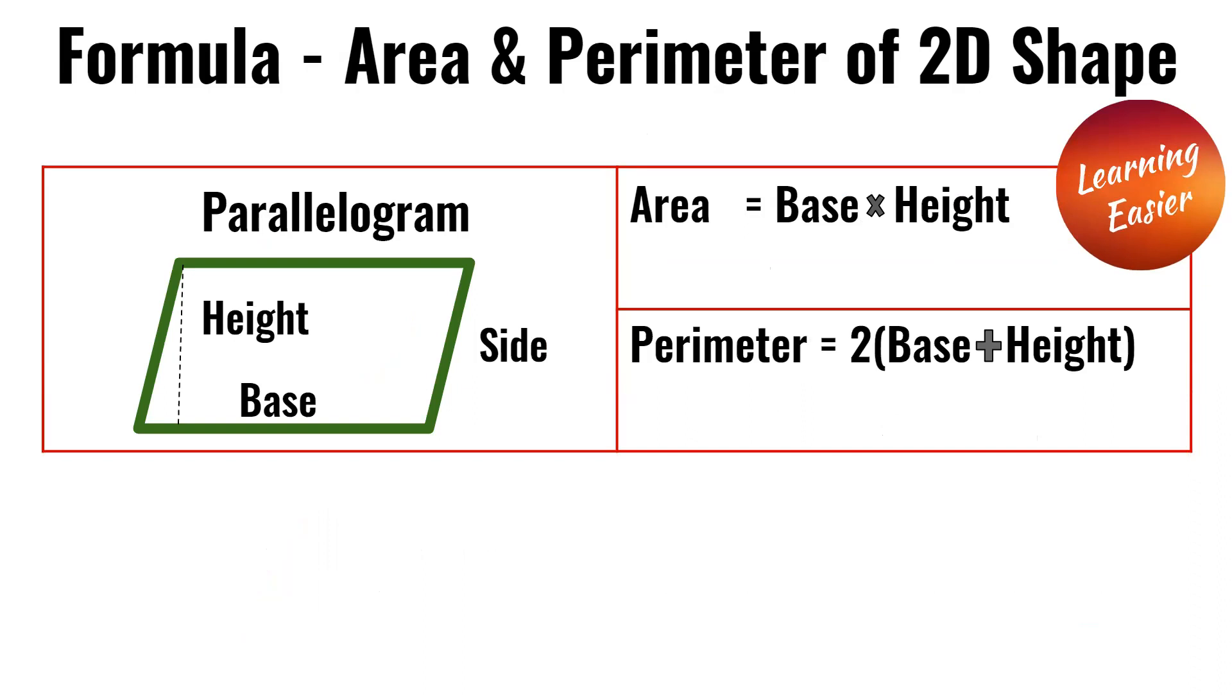For the parallelogram, the area is base times height and the perimeter is 2 (base plus height).